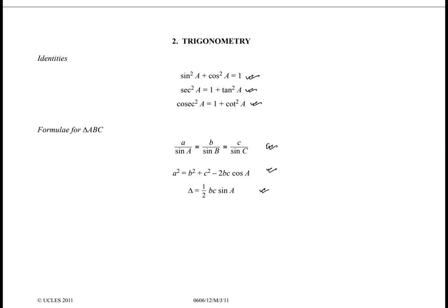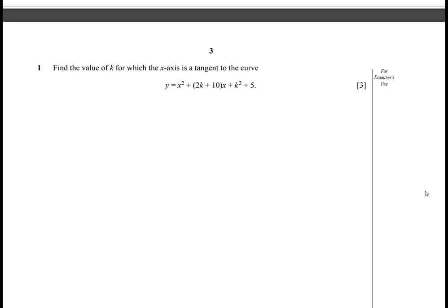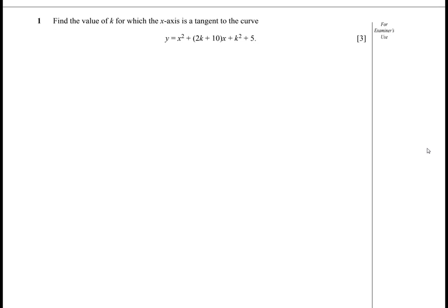Let's go to the first page. Let me adjust the page view — okay, we have a better view now. Let's read the question: find the value of k for which the x-axis is a tangent to the curve y = x² + (2k + 10)x + k² + 5.